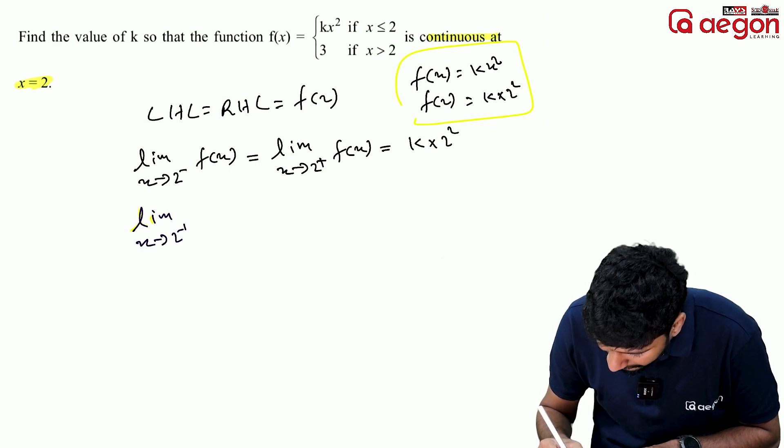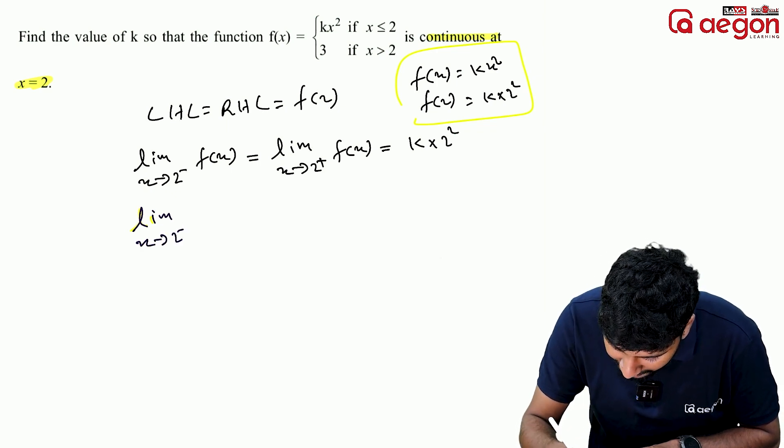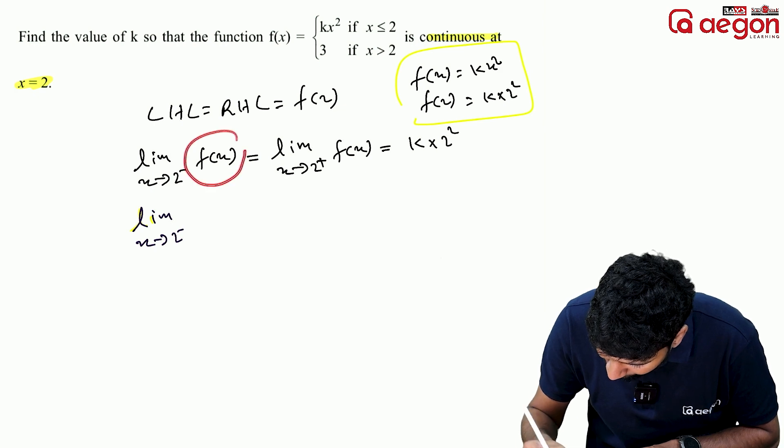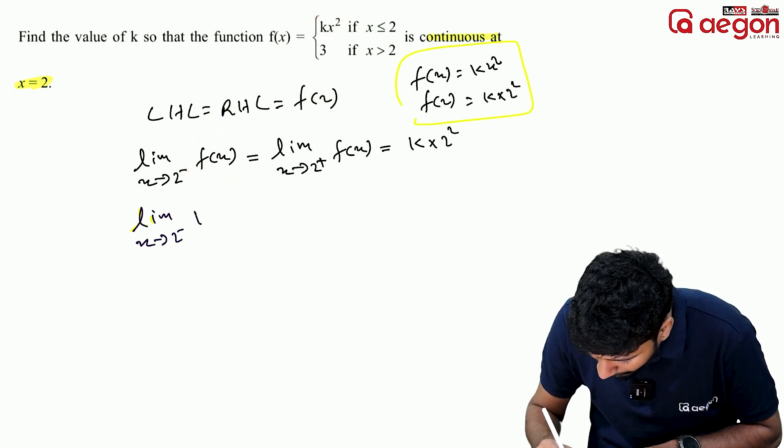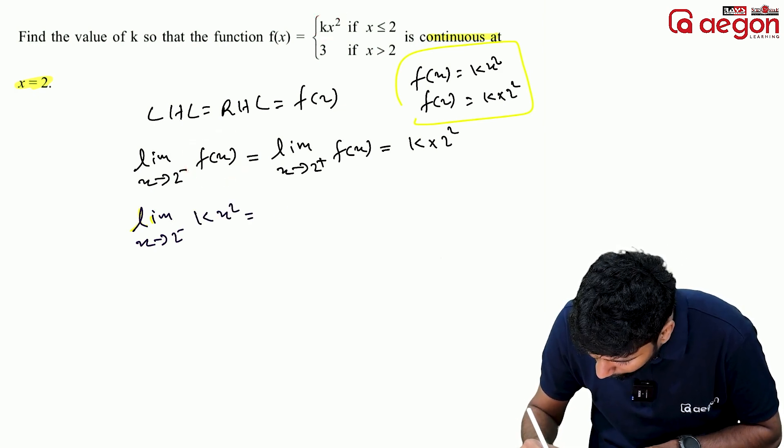So limit x tends to 2 minus, the function is kx², equals limit x tends to 2 of kx².